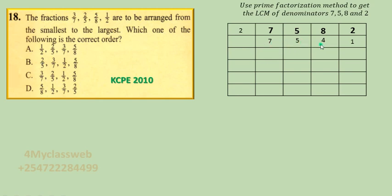We look for another prime number. Taking 2 again: 7 cannot be divided by 2, so drop it; 5 cannot be divided by 2, so drop it; but 4 divided by 2 gives 2, and the column that reached 1 drops a 1. Repeating once more with 2: 7 and 5 are dropped again, and 2 divided by 2 gives 1. Now we are left with 7 and 5, which are themselves prime numbers.